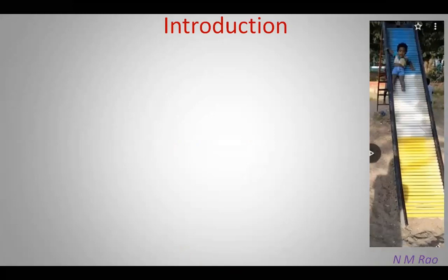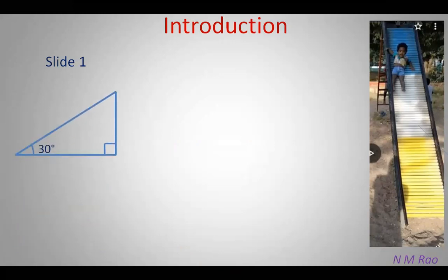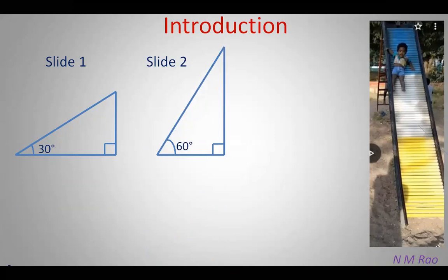What is the picture about? It is the boys sliding in a park. Let us suppose in a park there are two slides to play. Observe that there will be right angle triangle shapes in each slide. Here AC is the length of the slide, which is the same in both slides, and BC is the height of the ladder, and AB is the horizontal distance between the foot of the slide and the ladder, and angle BAC is the angle between slide AC and the horizontal distance AB.